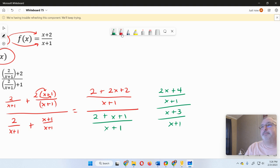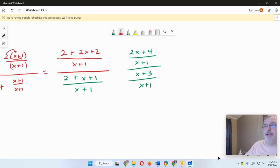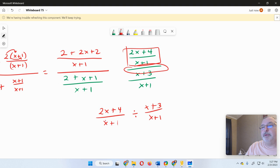But this is a division problem. So in division, we have to multiply by reciprocal. So first we're going to write this out as 2x plus 4 over x plus 1. That's that top fraction right here. This means to divide. And then we're going to divide by x plus 3 over x plus 1. And remember the rule is to keep, change, flip. And look how nice this works out. These x plus 1s are going to cancel.